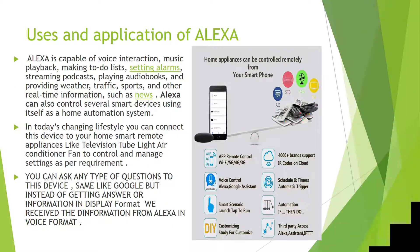Uses and applications of Alexa: Alexa is capable of voice interaction, music playback, making to-do lists, setting alarms, streaming podcasts, playing audiobooks, and providing weather, traffic, sports, and other real-time information such as news. Alexa can also control several smart devices using itself as a home automation system.